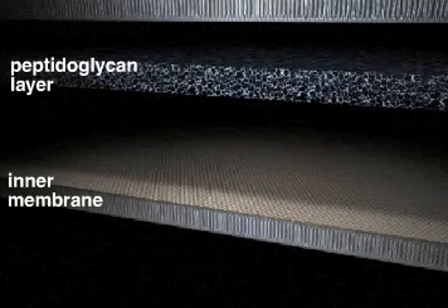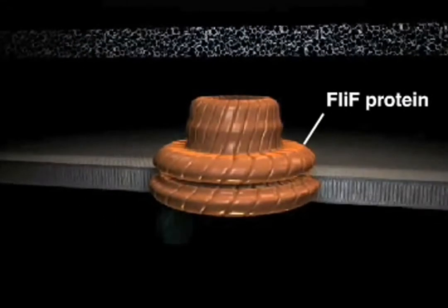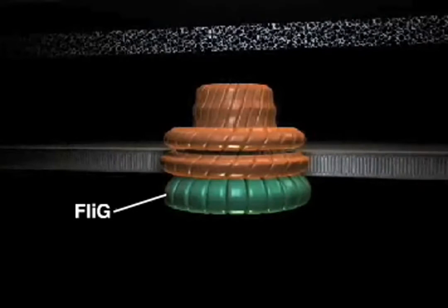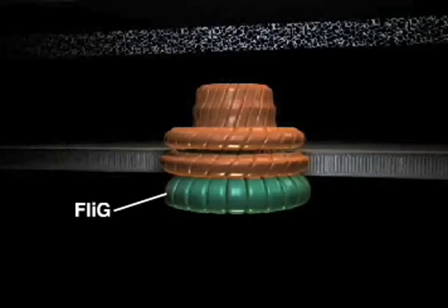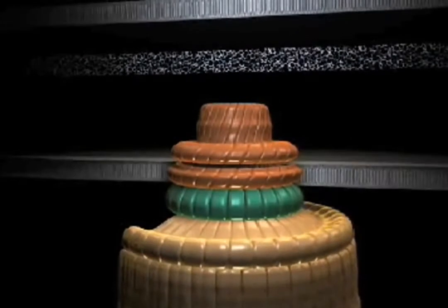Flagella begin their assembly with structures in the inner membrane. Twenty-six subunits of an integral membrane protein called FliF come together in the plasma membrane to form the MS ring. The FliG proteins assemble under the MS ring. FliG, along with FliM and FliN proteins, make up the rotor.